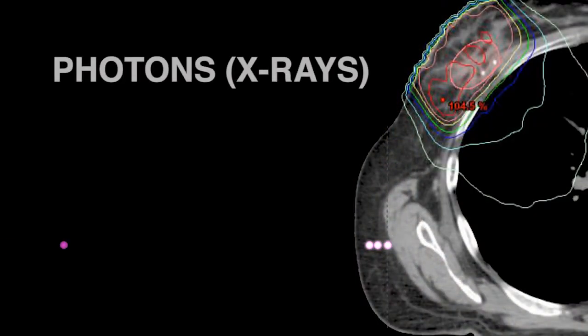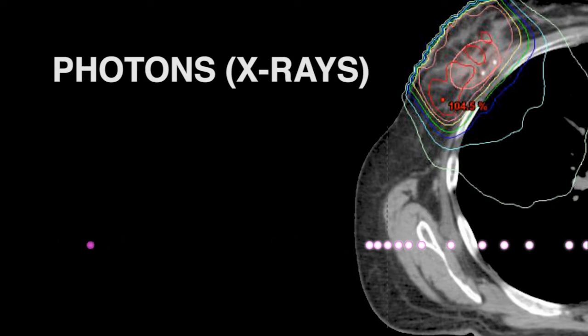Photon beams or x-ray beams have exponential attenuation inside the patient's body. They have a buildup region — as they enter the patient's skin, they don't deposit much dose to the skin, so we have skin sparing. If the skin received the full treatment dose, there would be severe skin damage and we couldn't proceed with radiation therapy. The radiation has a buildup region as it enters the skin, so very little dose is deposited close to the surface.